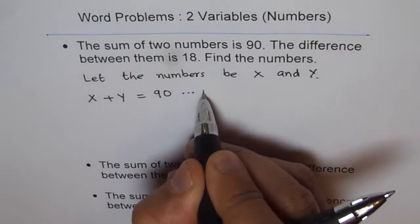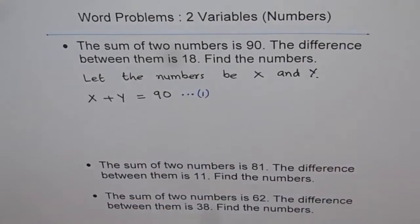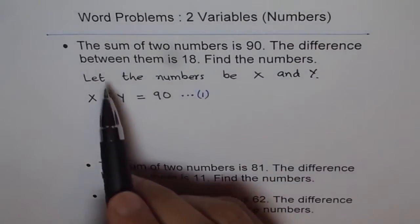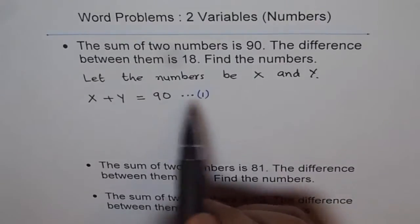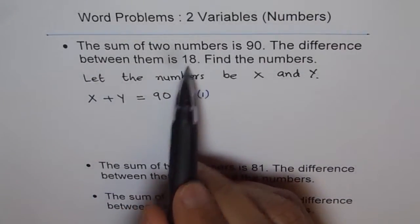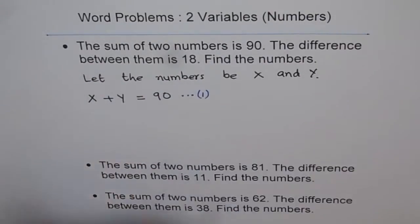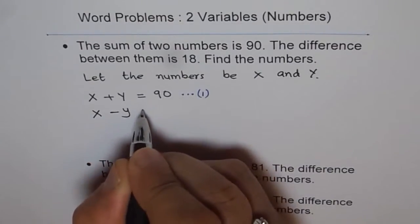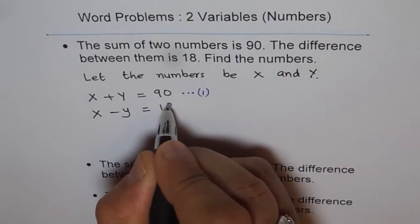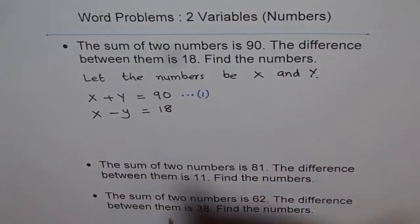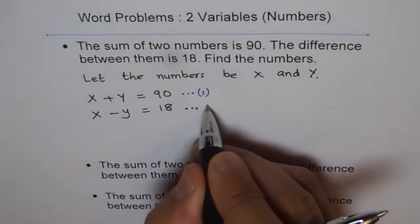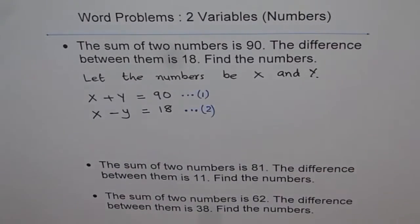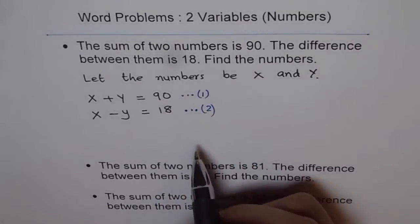Now read further — it says the difference between them is 18. Let's assume X is bigger, so we write X minus Y equals 18. That is our second equation. Writing equation numbers helps you to communicate clearly.